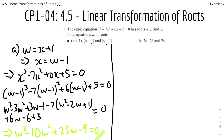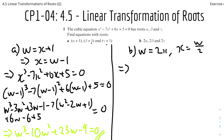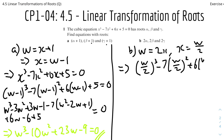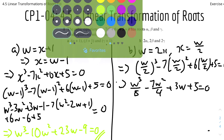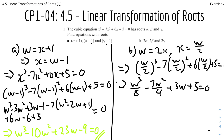For the second part, we do the same — we set w as a new variable equal to 2x. Therefore x equals w over 2. We substitute this into all parts of the equation, giving: (w over 2) cubed minus 7 times (w over 2) squared plus 6 times (w over 2) plus 5 equals 0. Expanding, we get w cubed over 8 minus 7w squared over 4 plus 3w plus 5 equals 0. We can simplify by multiplying all terms by 8 to get rid of the denominators.